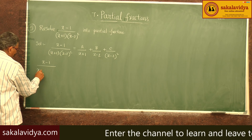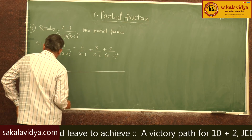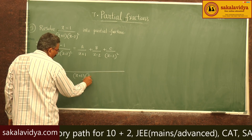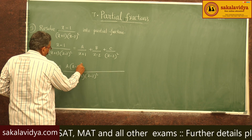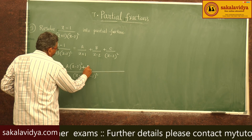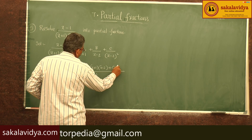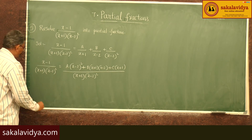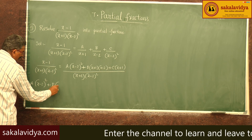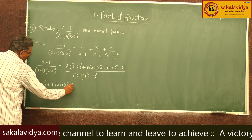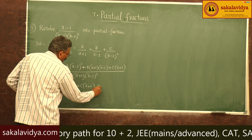Multiplying both sides by (x plus 1)(x minus 2) squared, and cancelling (x plus 1), we get: A times (x minus 2) squared plus B times (x plus 1)(x minus 2) plus C times (x plus 1) equals x minus 1.